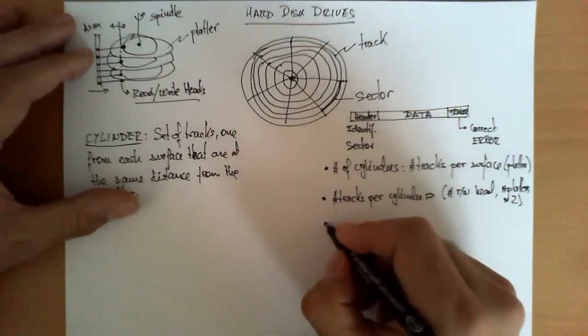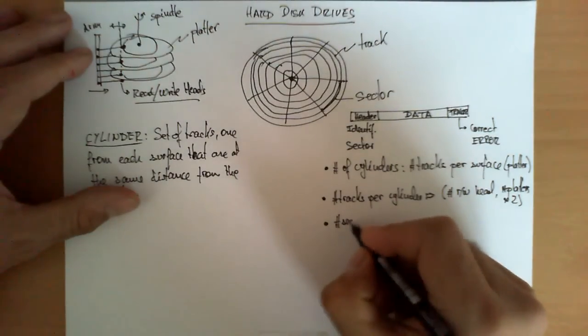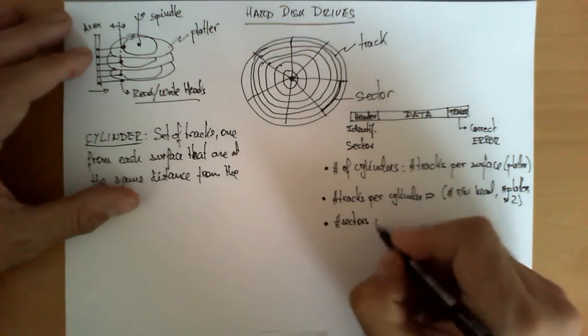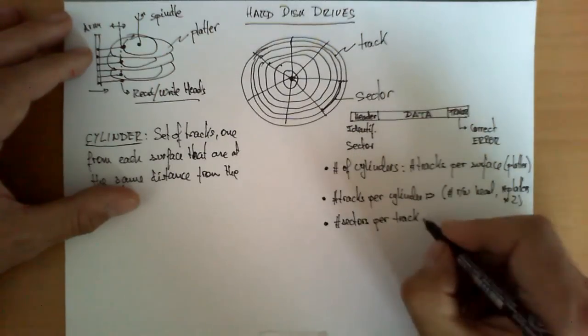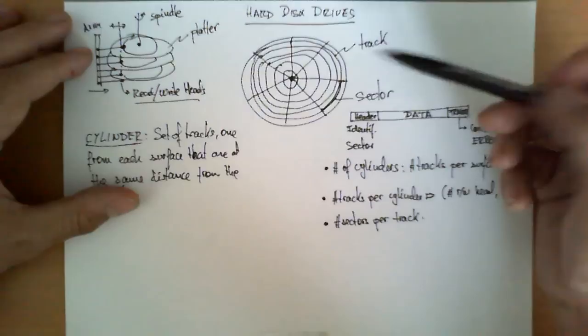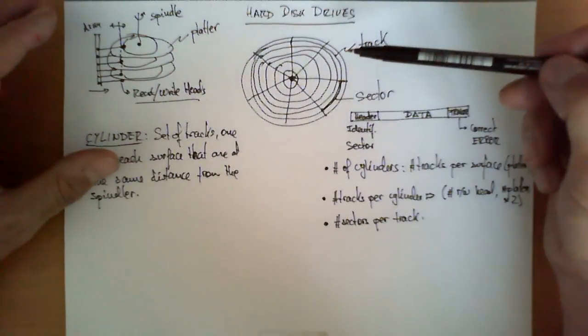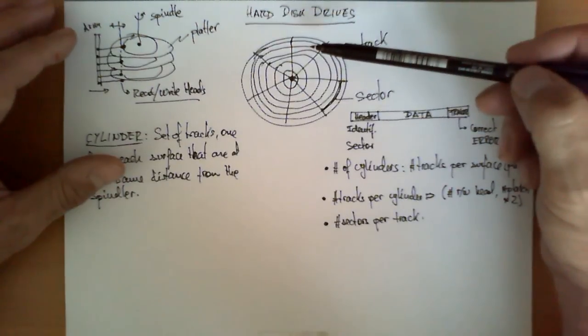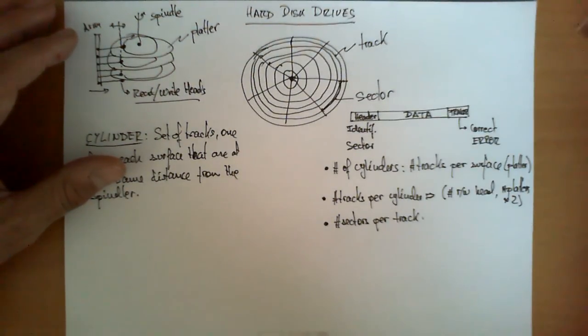The third dimension to consider a disk organization is the number of sectors per track. And as we can see here, we have one track, and in this specific example, although again, this division changes significantly from manufacturer to manufacturer, each track is divided into one, two, three, four, five, six, seven sectors.